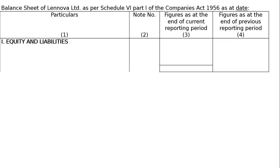In this question, Lenovo Ltd has authorized share capital of 1 lakh divided into 10,000 equity shares of rupees 10 each. It had existing issued and paid up capital of rupees 25 lakhs. It further issued to the public 2 lakh 50,000 equity shares at a premium of 20% for public subscription, payable as follows: on application rupees 3, on allotment rupees 6, on first call the balance. This was fully subscribed and allotment was made to all applicants.